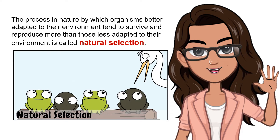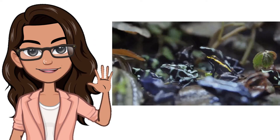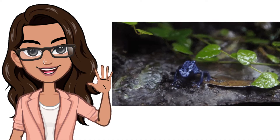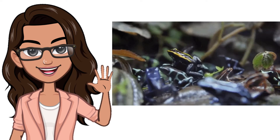Gray wild frogs blend well in dark wooded areas on tree bark, and green wild frogs blend well with green vegetation found in marshes and swamps. The green wild frog on the bark of a tree is easier for a predator to find compared to a green wild frog on a green leaf. So the green wild frogs that go into habitats where they are not camouflaged are more likely to be eaten by predators. The wooded habitat of the gray wild frogs is larger and extends further north, while the green wild frogs' swamp and marsh habitat are concentrated in the south.